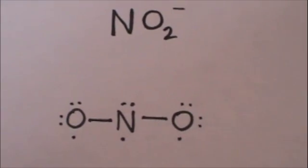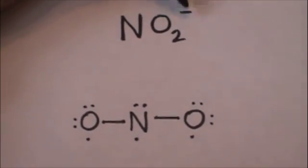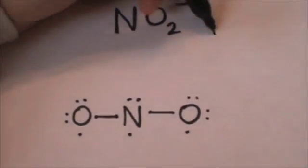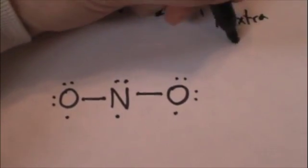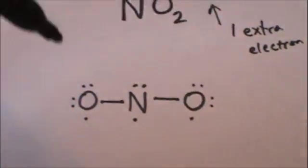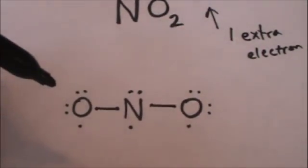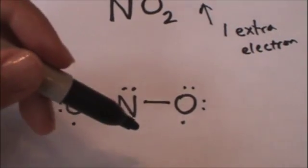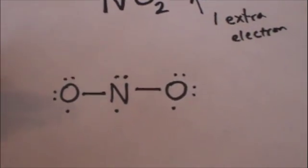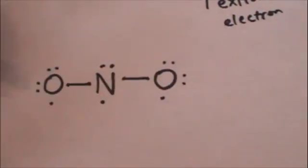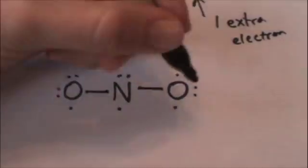We've got to remember that extra electron. The negative charge means there is one extra electron that needs to go into this structure. We could put it on the nitrogen but it's actually going to want to go towards the more electronegative atom. So which one is more electronegative, nitrogen or oxygen? Well oxygen is.